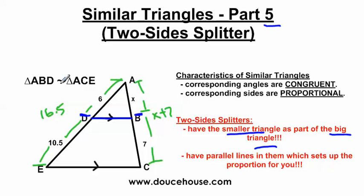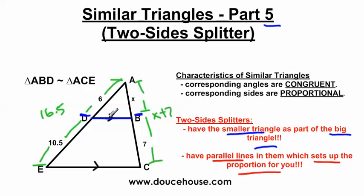This is called the two side splitter because one side of the small triangle splits two sides of the big triangle into two parts. These are similar triangles, so corresponding angles are congruent and corresponding sides are proportional. But there's also an additional feature to two side splitters which helps simplify the problem. Whenever you have a two side splitter, you're always going to have parallel lines which set up the proportion for you. I have arrows indicating that these lines are parallel to each other. If parallel lines intersect the same lines, then it cuts those lines proportionally.